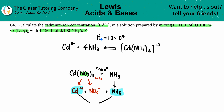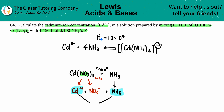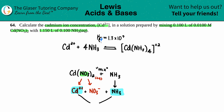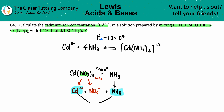The equation is Cd²⁺ combining with NH₃ to make [Cd(NH₃)₄]²⁺. Whenever you see brackets with a charge, that's a complex ion. The Kf — the formation constant — is 1.3 × 10⁷. Kf stands for the formation of the complex ion.